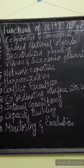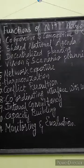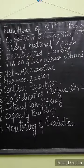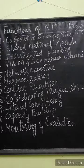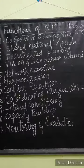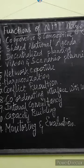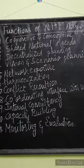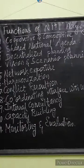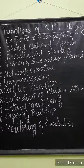The first function is Cooperative and Competitive Federalism. To make the states participate in an active manner, it formulates national policy. There will be cooperation, and at the same time there will be competition between the states, as each state wants to become powerful.